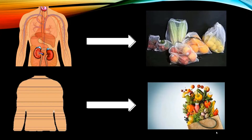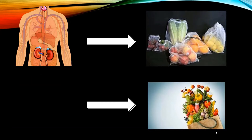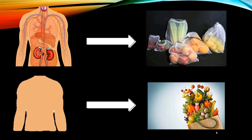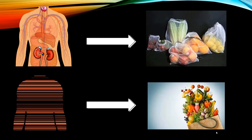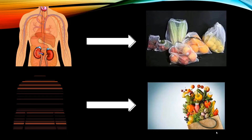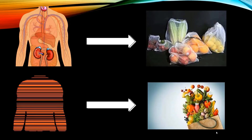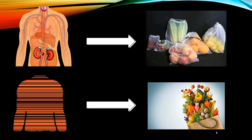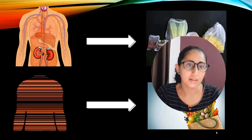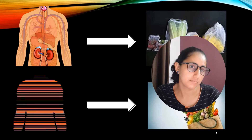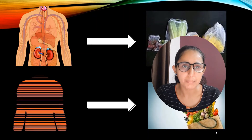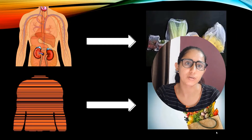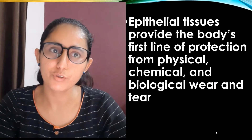There is an analogy of epithelial tissue with polythene bags or any other container used to carry vegetables. Different vegetables are carried in different polybags, just like different organs are visible because of the epithelial tissue in our body. Without epithelial tissue, there would be no cavity lining, no organ separation, and no skin — making the existence of an animal body structure impossible to imagine.